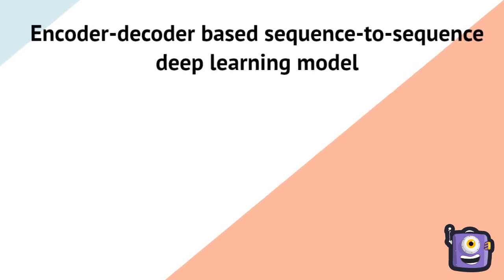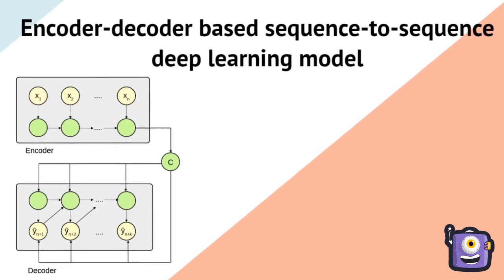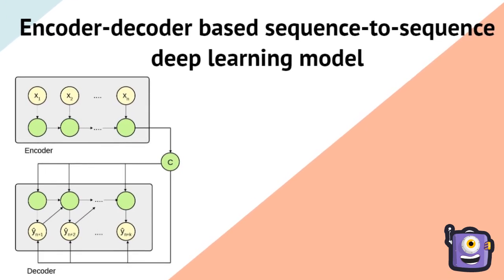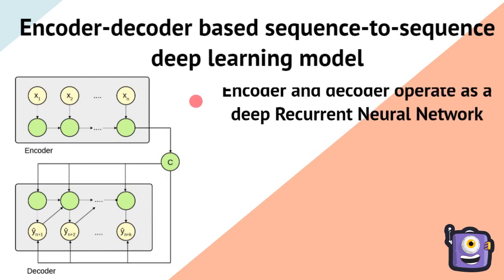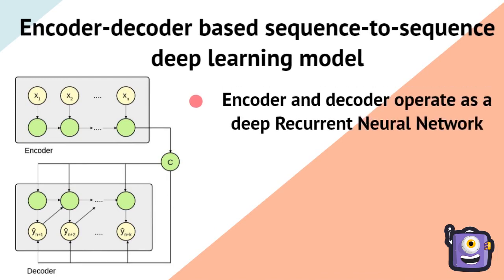To address this problem, we use an encoder-decoder-based sequence-to-sequence deep learning model, which consists of two components: an encoder and a decoder, each of which is an RNN.